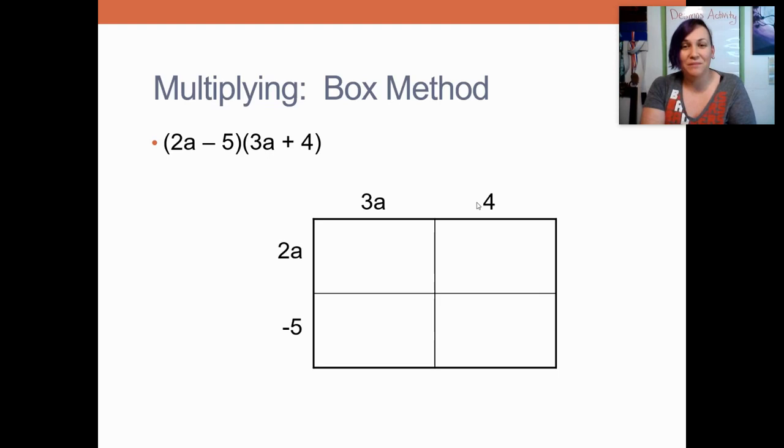Now I'm going to fill in my box using multiplication. So I'm going to multiply 2a times 3a. 2 times 3 is 6, and a times a is a squared. In my next box over, I'm on my first row still. So 2a times the 4, and that makes an 8a. 2 times 4 is 8.